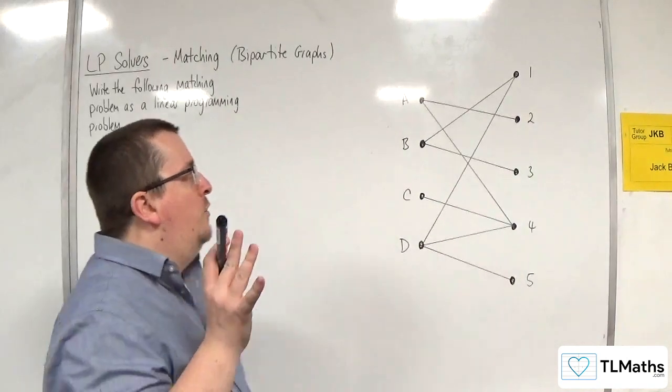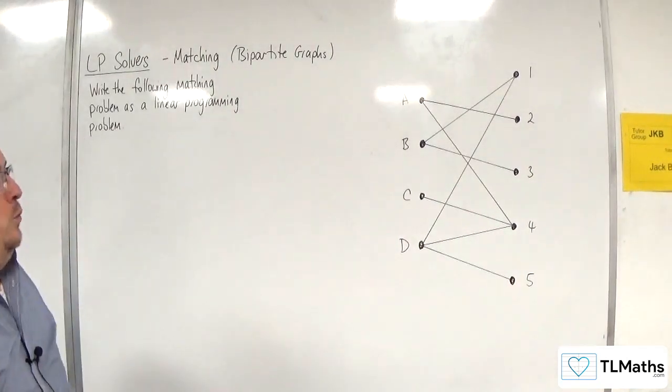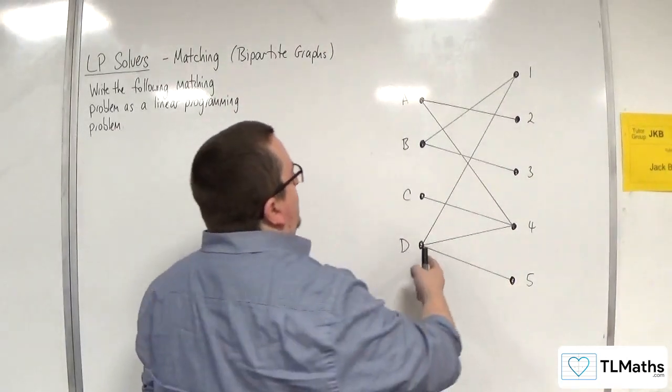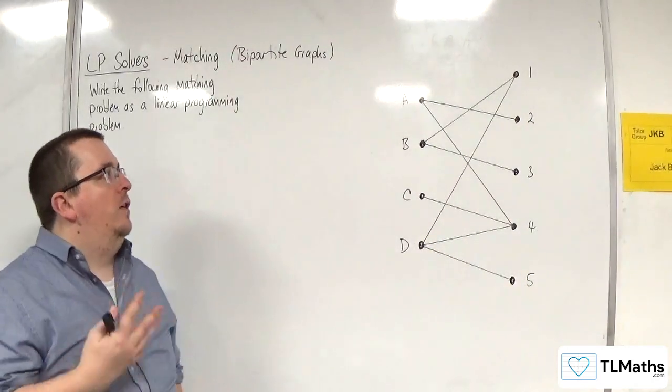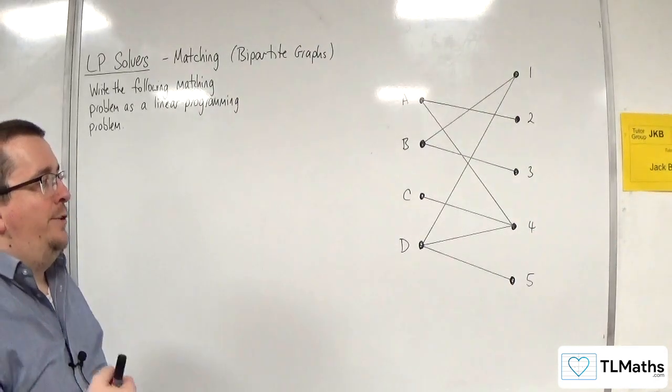So in this video, we've got another bipartite graph where we've got four workers A, B, C, D, but this time we've got one too many jobs. We've got jobs 1, 2, 3, 4, and 5.